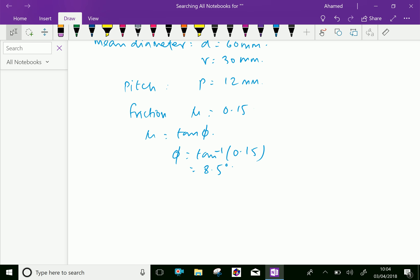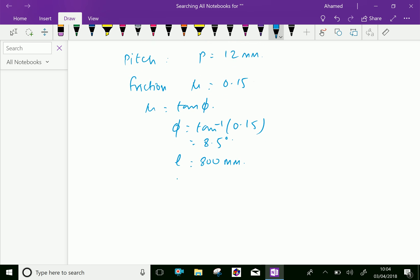Length of the rod L equals 800 mm. And W, the load to be raised, equals 15 kN.